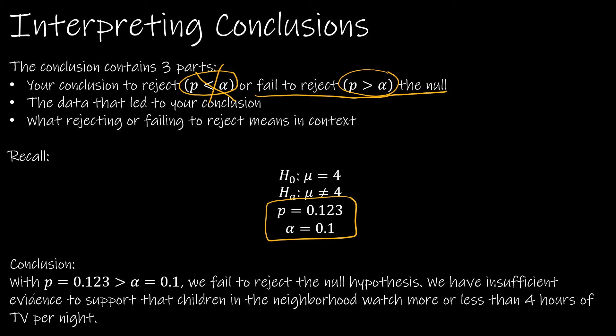So the two parts that we start with are the data that supports it. With p = 0.123 greater than alpha, which is 0.1, we fail to reject the null hypothesis. And then, of course, the most important part - what does that mean?